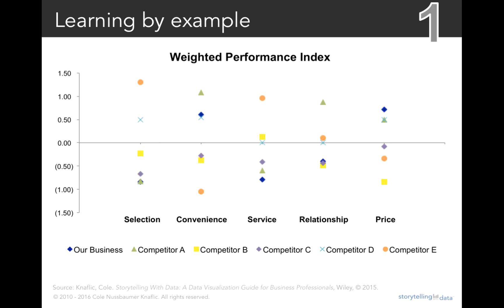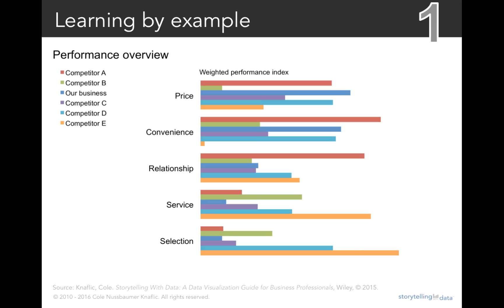Let's look at a couple of different views here. First, I could think about using contrast in this current view — push everything to the background except our business and use just color there. Notice that does make it easier to quickly focus on how our business is doing in each of these dimensions. But we can also change this view, which will allow us to leverage some of the other means of contrast we've talked about.